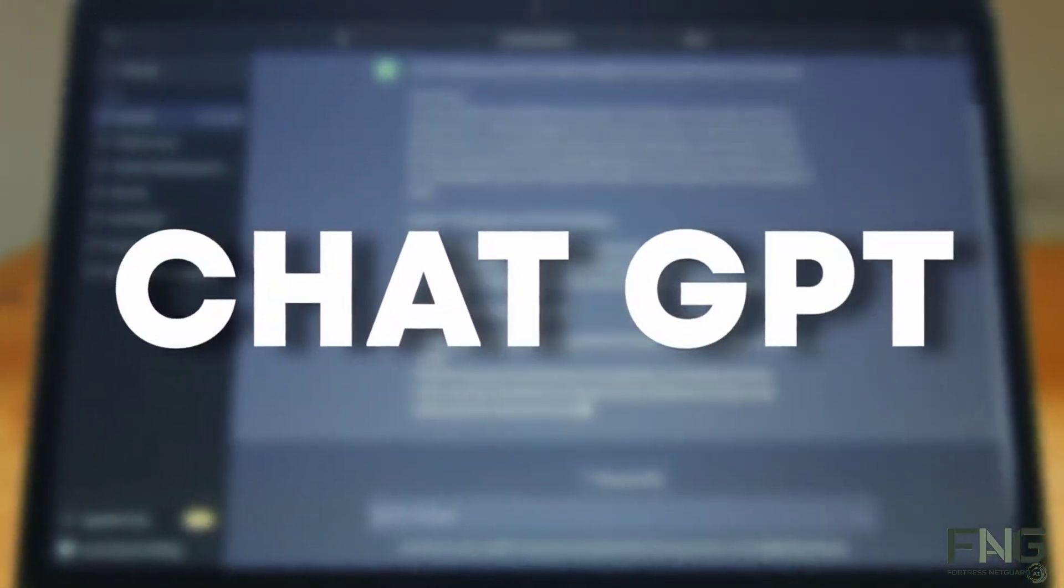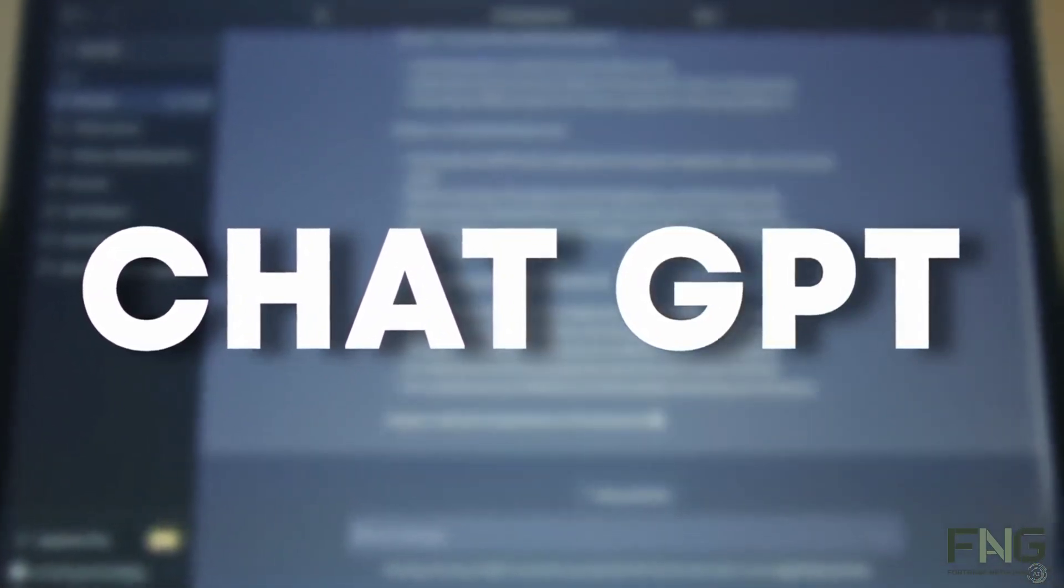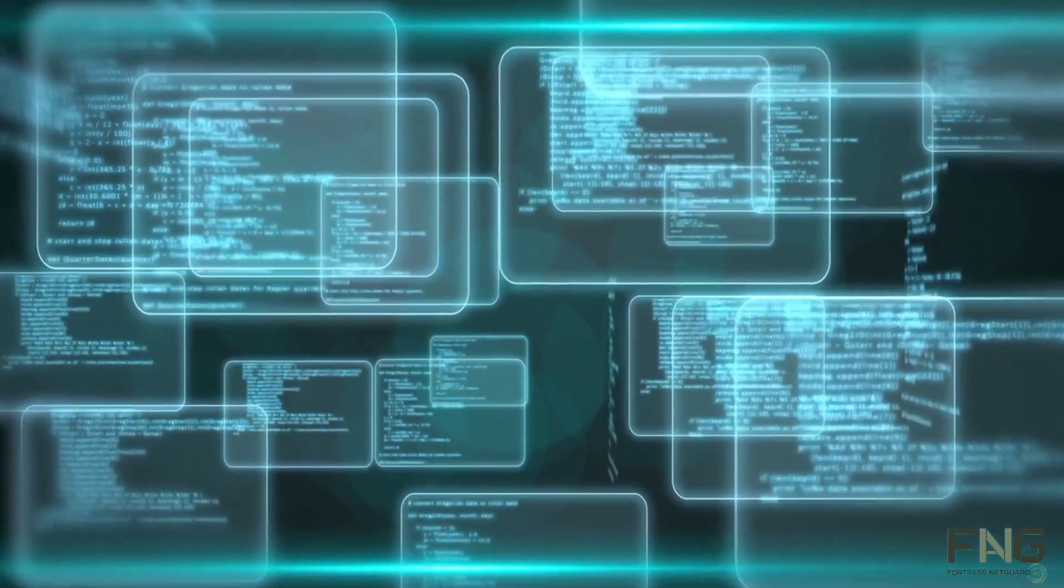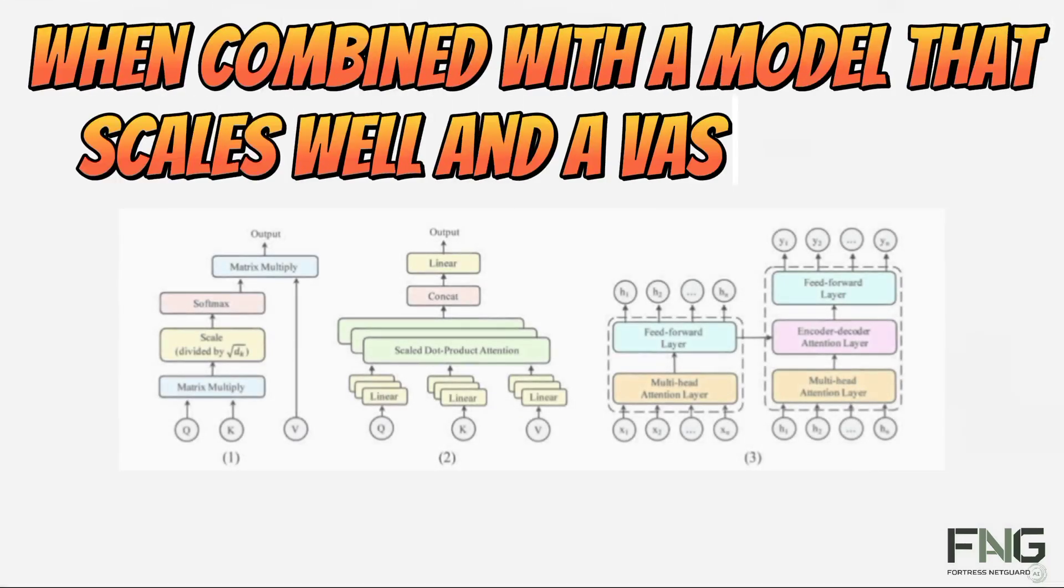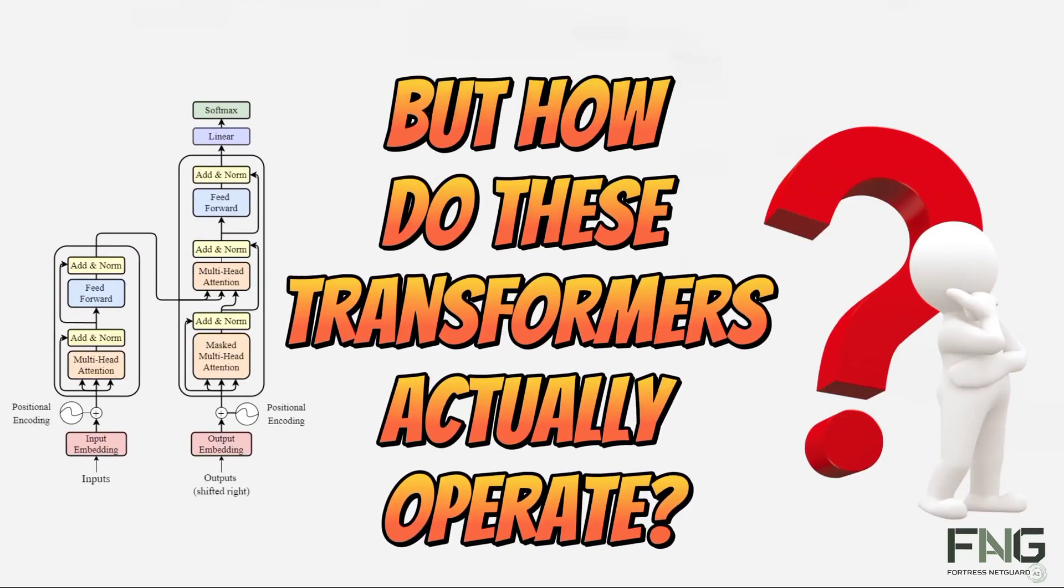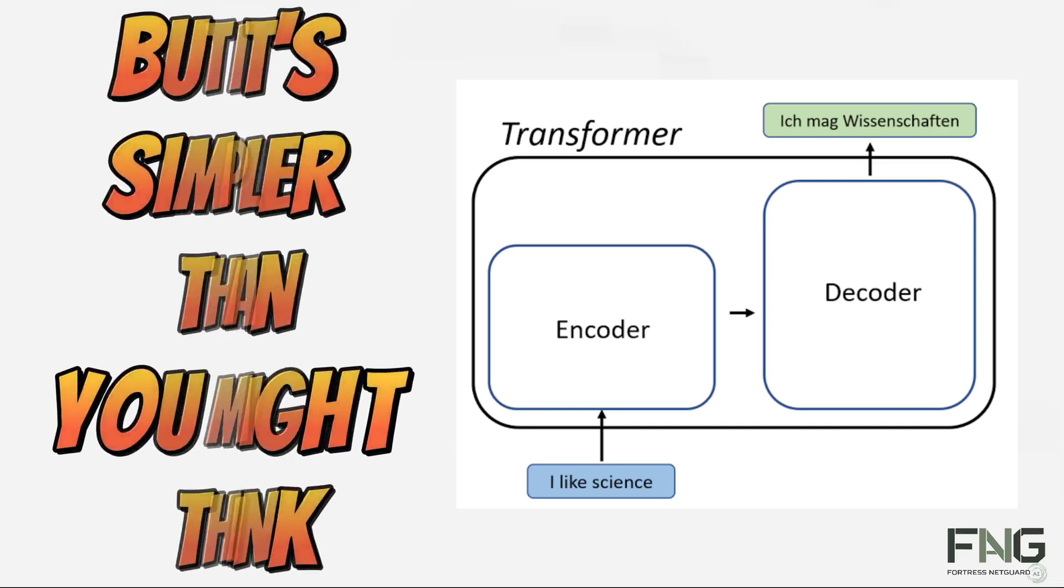Facilitating the training of significantly larger models. With the appropriate hardware you could train models of immense size. How big? Enormous. Remember GPT-3, the model capable of writing poetry, code, and engaging in conversations? It was trained on nearly 45 terabytes of text data covering almost the entire public web. So if there's one thing to remember about transformers, let it be this: when combined with a model that scales well and a vast dataset, the results can be mind-blowing.